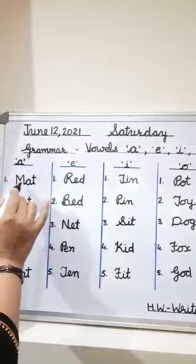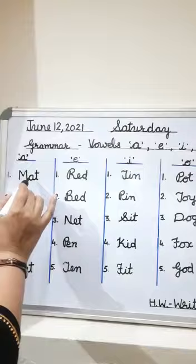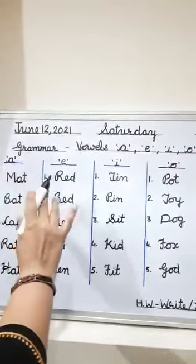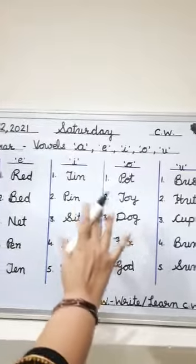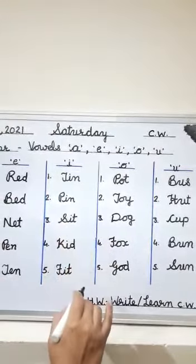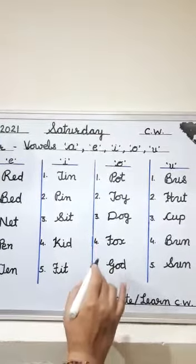Number one: mat, M-A-T. आप देख रहे होंगे, A जो है vowel है, और इसमें जो है A का sound भी है. इसी तरह से, ये सभी words हैं जिनमें vowel का sound है. Okay, dear children, you have to write this work in your notebook and learn it.